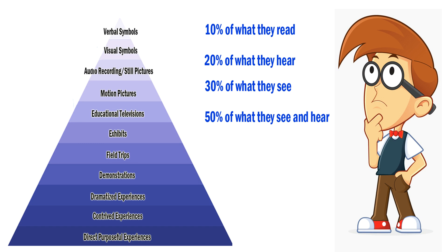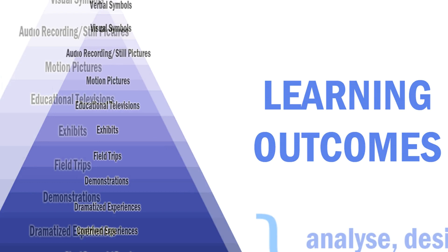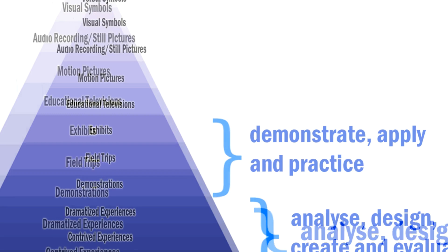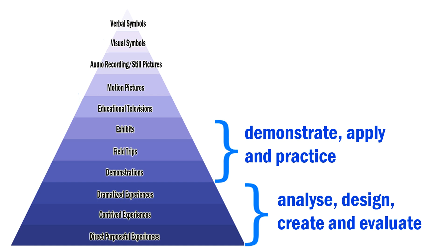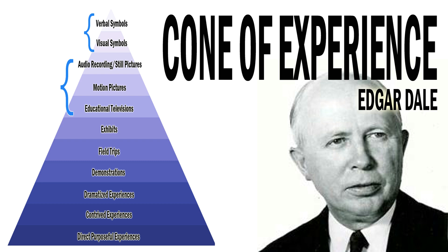Now let us see the learning outcomes for every component. For the levels of direct purposeful experiences, contrived experiences, and dramatized experiences, learners are able to analyze, design, create, and evaluate. For the levels of demonstrations, field trips, and exhibits, learners are able to demonstrate, apply, and practice. For the levels of television, motion pictures, visual symbolic, and verbal symbolic, learners are able to define, describe, list, and explain. Through Edgar Dale's cone of experience, teachers are helped to balance the tasks given to students, as well as the educational technology to be used in carrying out those tasks.